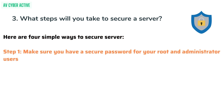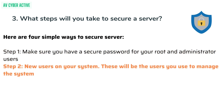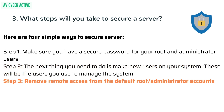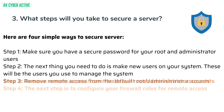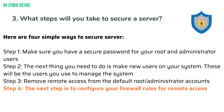Step 1: Make sure you have a secure password for your root and administrator users. Step 2: Create new users on your system — these will be the users you use to manage the system. Step 3: Remove remote access from the default root administrator accounts. Step 4: Configure your firewall rules for remote access.